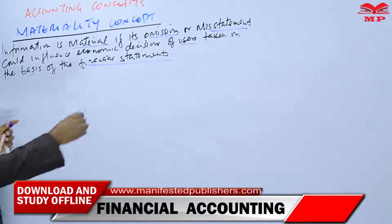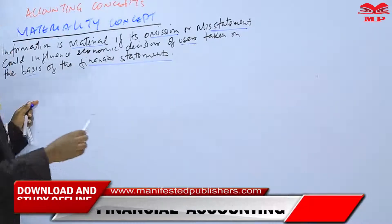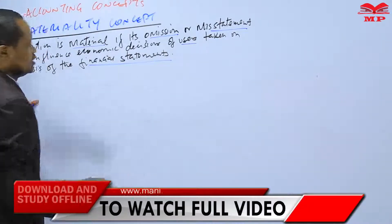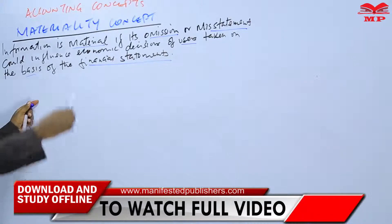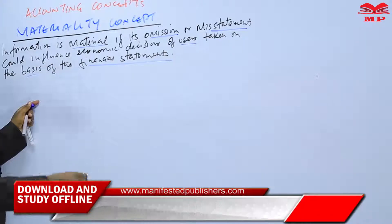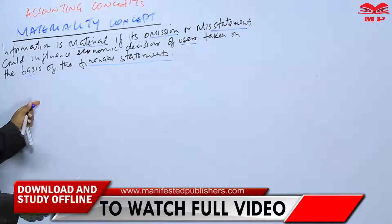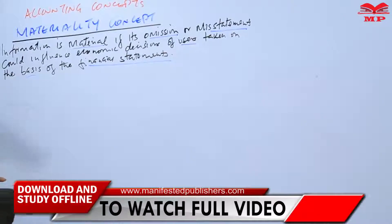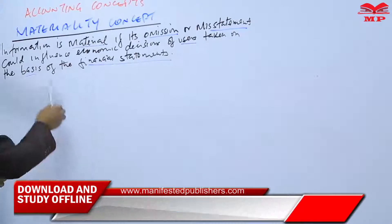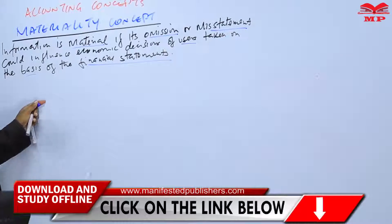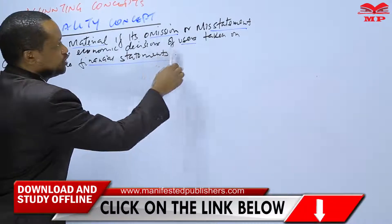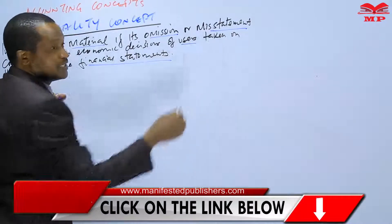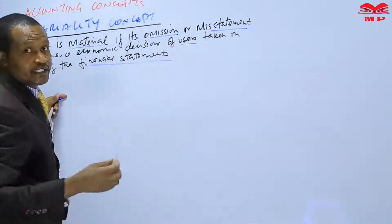If the omission could influence the decision, then we say that information is material. But if it does not influence the decision taken by users based on the financial statement, then we say that information, or that omission or misstatement, is immaterial.